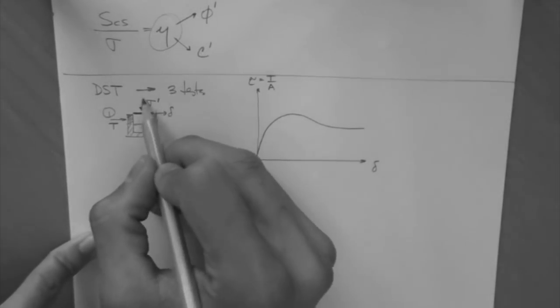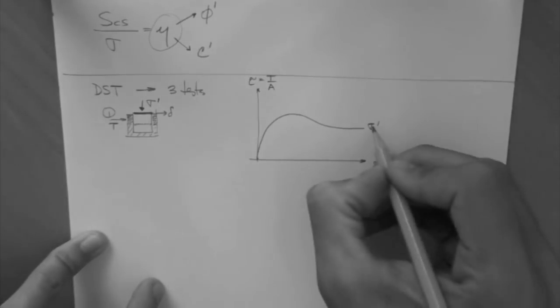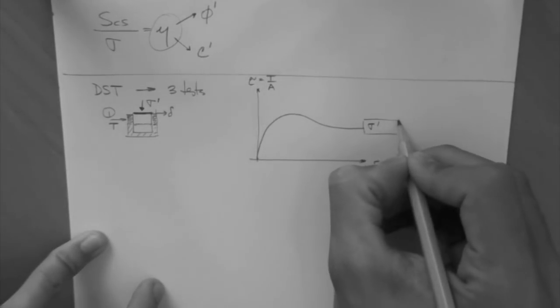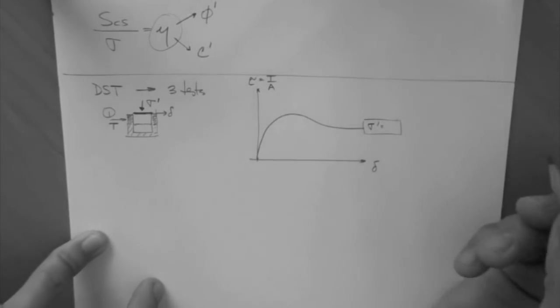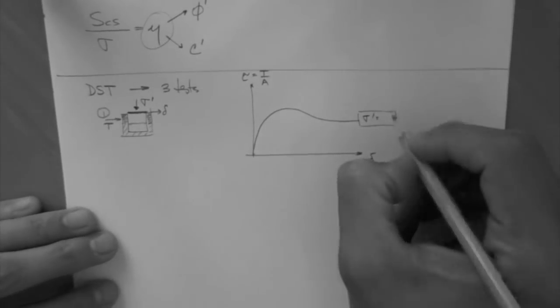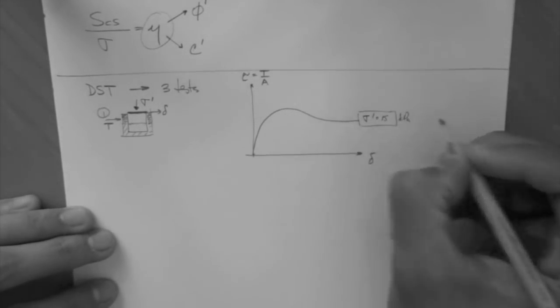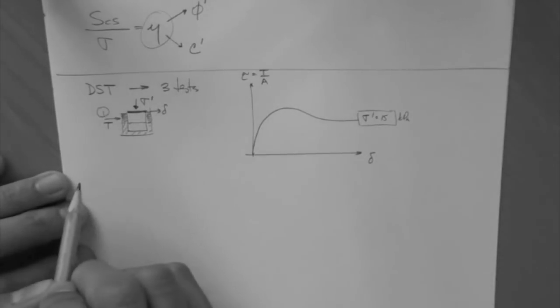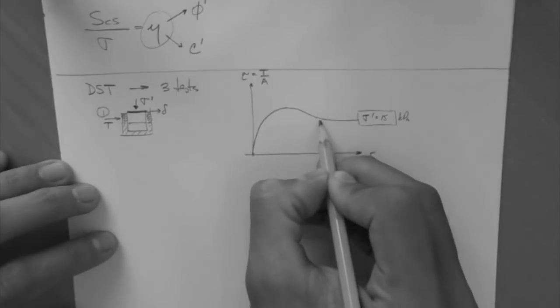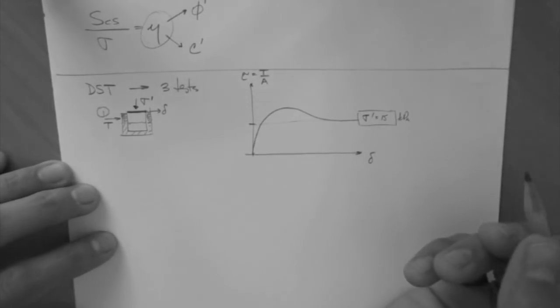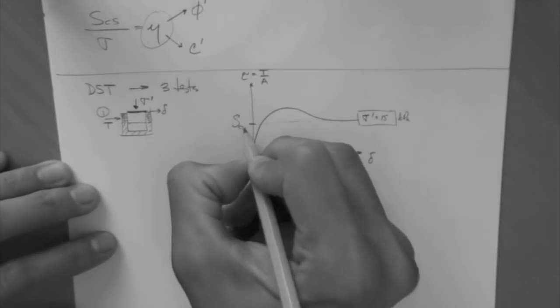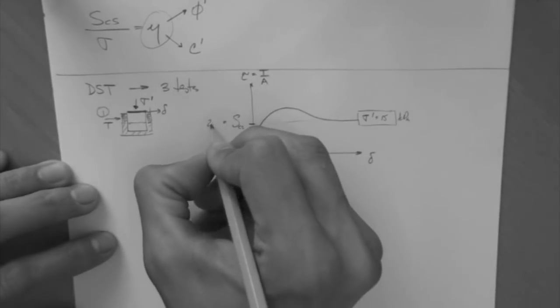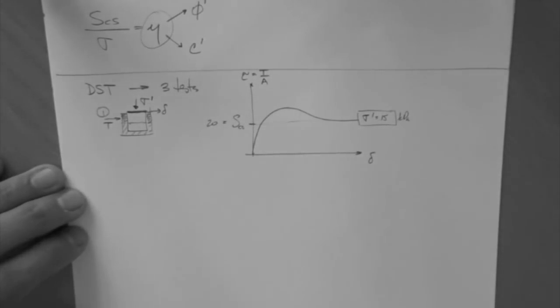That curve is for this effective stress. Let's say that this effective stress is 15 kPa. So you impose 15 kPa for this test, test number one, and this is the curve that you got. So then you can extract the strength, critical state, which is, let's say, 20 kPa.